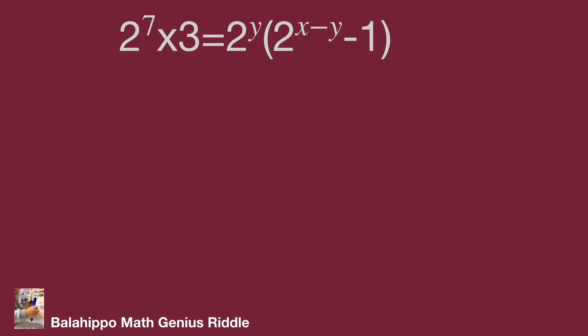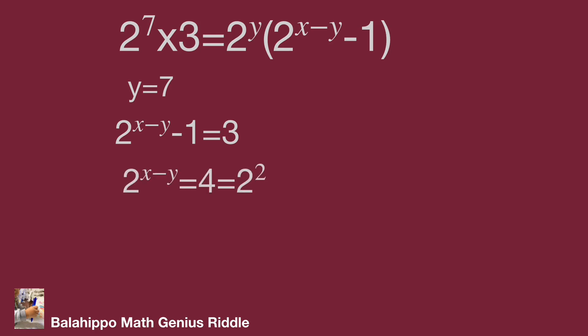Comparing items on both sides, we have 2 power of 7 equal to 2 power of y, so y equals 7. And 2 power of x minus y minus 1 equal to 3. Then 2 power of x minus y equal to 2 squared, so x minus y equals 2. Substituting y equals 7, we get x equals 9.